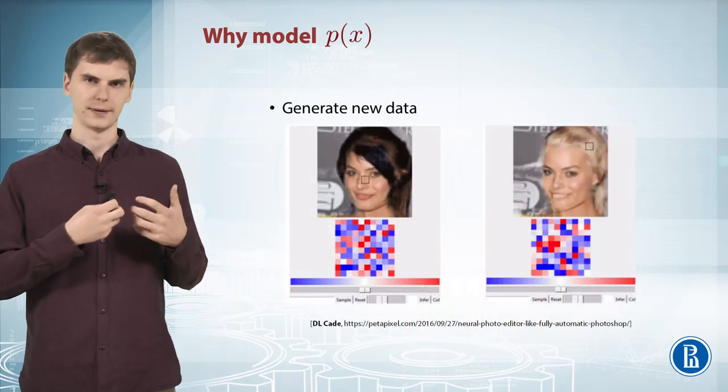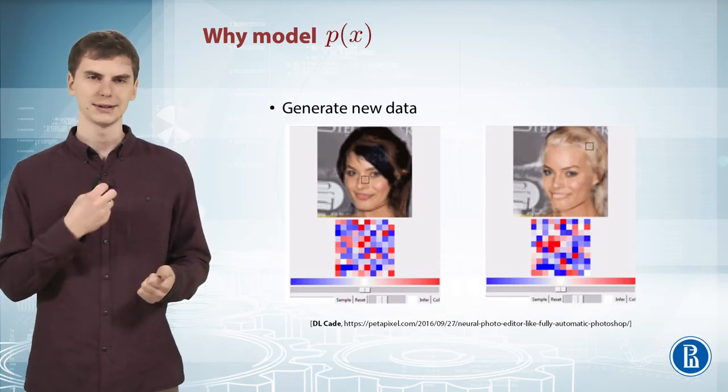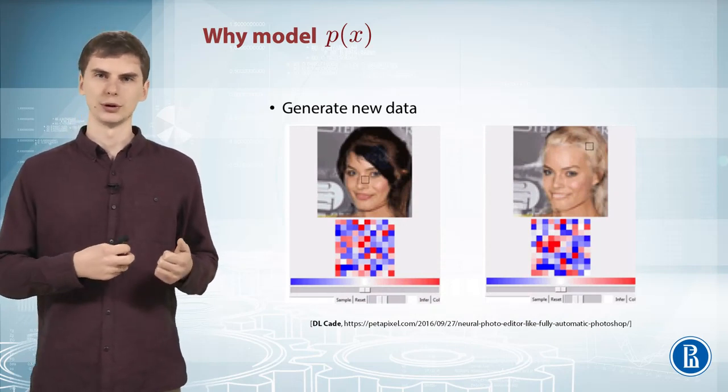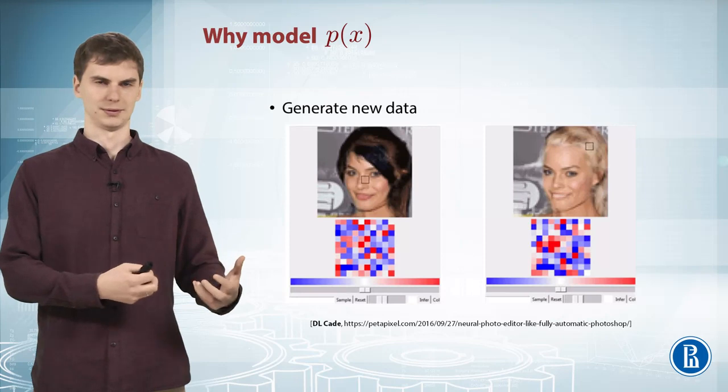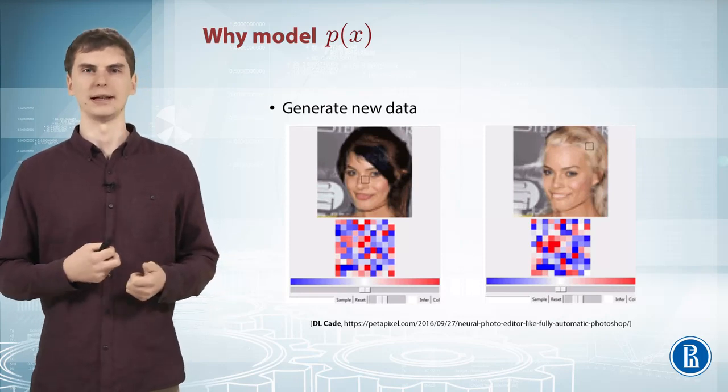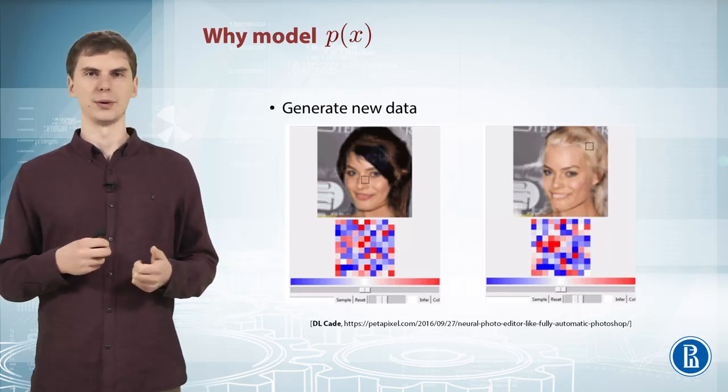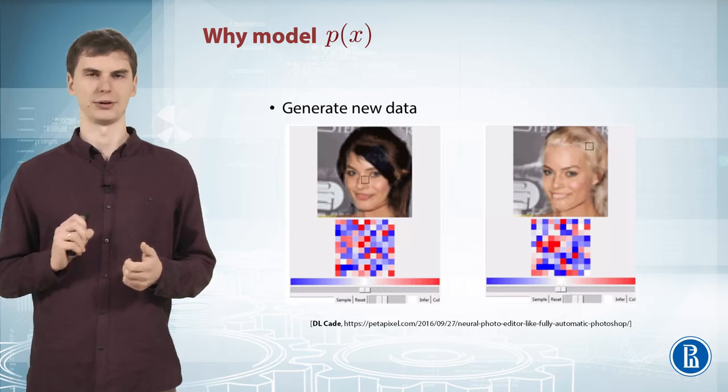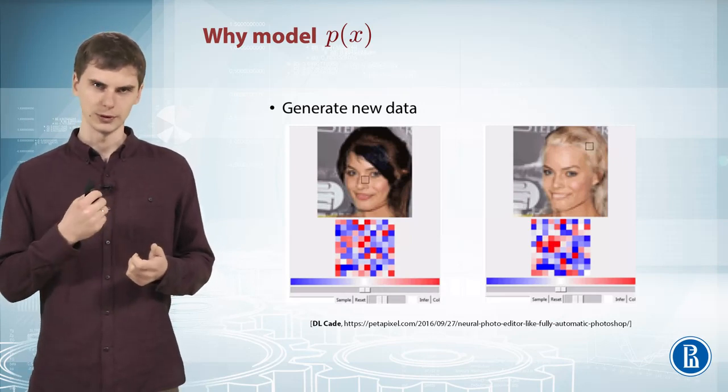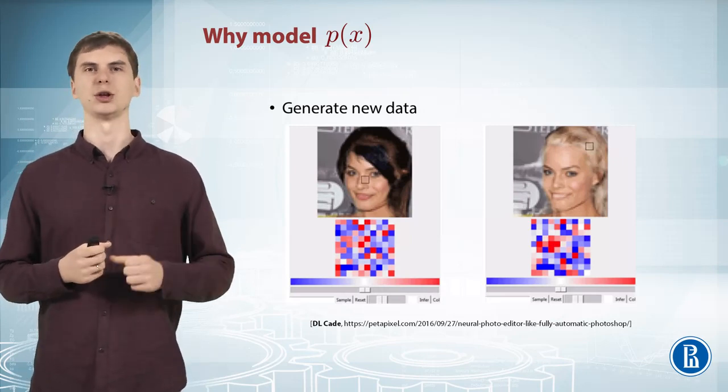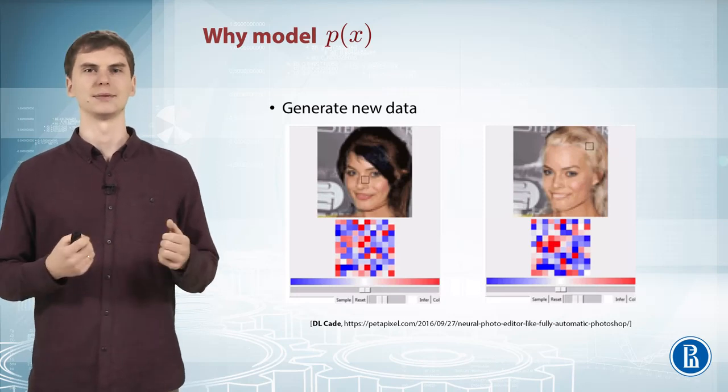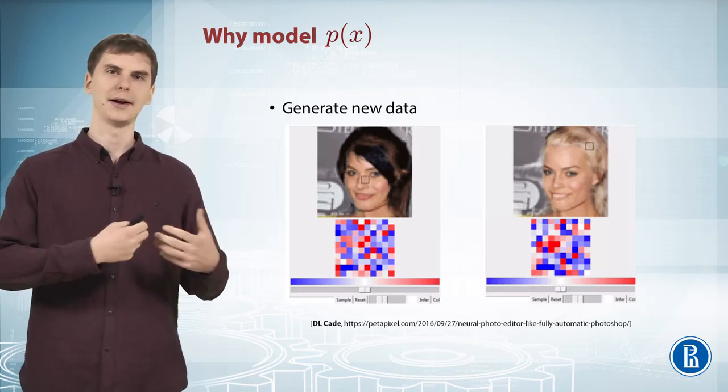If you have such a model, like P(X), you can also do kind of Photoshop of the future applications. With a few brush strokes, you can change a few pixels in your image, and the program will try to recolor everything else so the picture stays photorealistic. It will change the color of the hair, etc.